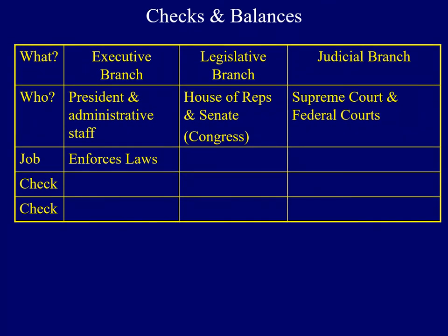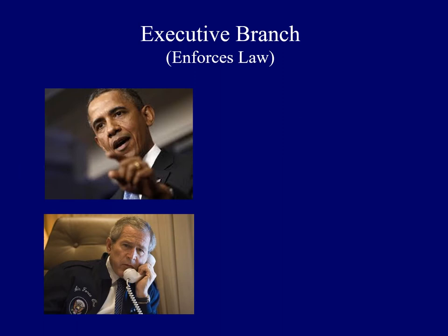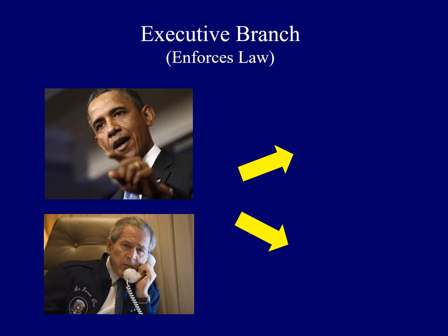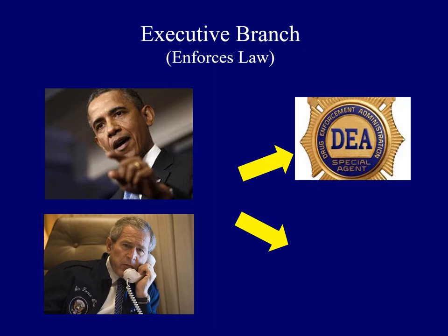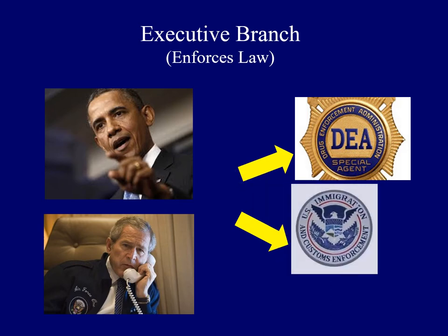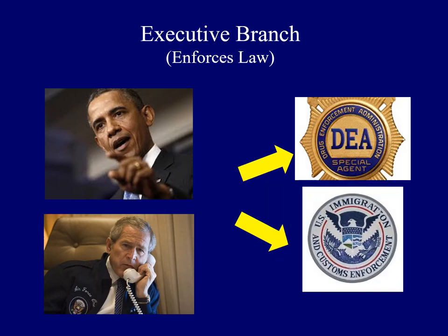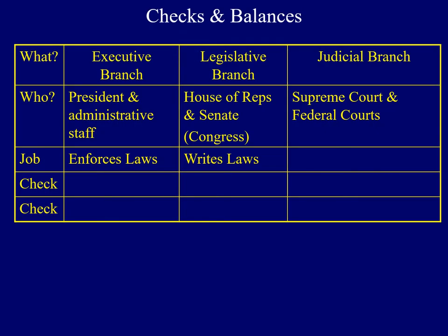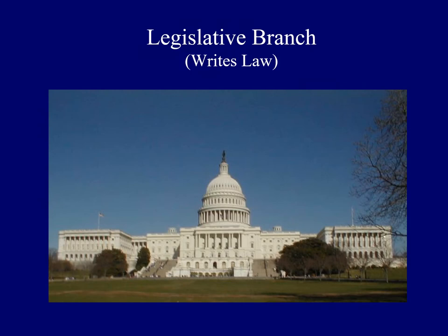Each branch has an important job. It's the job of the executive branch to enforce laws. Presidents Obama and Bush are examples — they enforce laws passed by Congress by providing direction to organizations like the Drug Enforcement Agency or the Immigration and Customs Enforcement Services. It's the job of the legislative branch to write laws, meeting in the United States Capitol — on the left the House of Representatives, on the right the Senate.